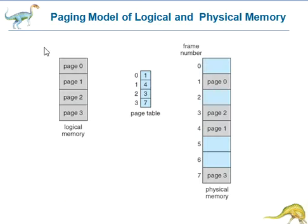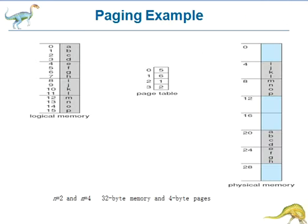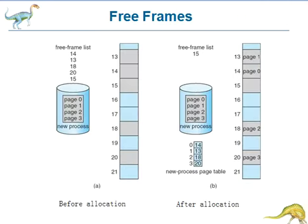Now, free frames. If N frames are available, they are allocated to the arriving process.